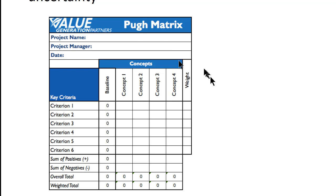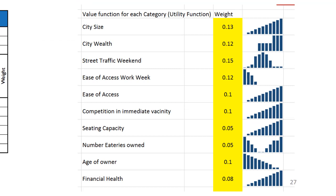You can get around the probabilistic side by using something called a multiple objective decision hierarchy process. This was developed and promoted by Ralph Keeney, one of the old-time decision analysts. The way that process works is there's a utility function assigned to each of the key criteria. For example, one criterion might be city size — this is trying to evaluate buildings as an example — and another might be city wealth.